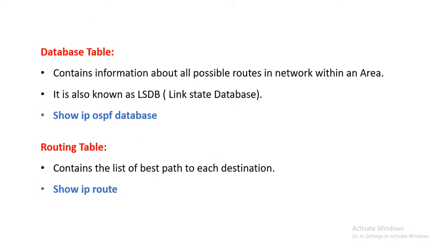The database table contains information about all the possible routes in the network within the area. For example, if there are 10 routes from a source to a destination, this table will show all 10 routes. It is also known as the LSDB — Link State Database. The command 'show ip ospf database' is used to view all the database table entries.